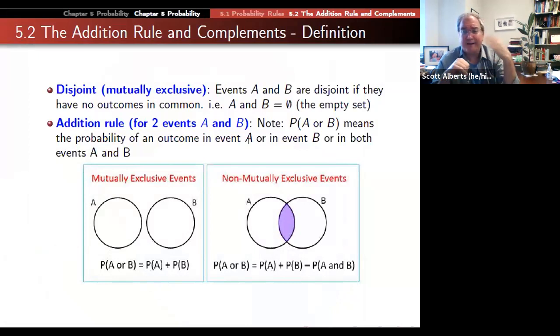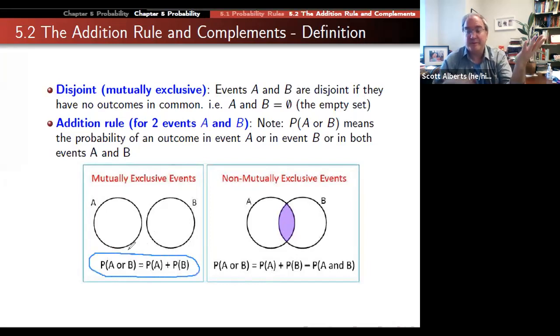So if I say what's the probability a roll of one and what's the probability a roll of three? Well on one roll of the die I can't get a one and a three. I only get one outcome. So those two events are disjoint. What that means from a probability perspective is that we can just do simple addition. If the probability of rolling a one is one-sixth and the probability of rolling a three is one-sixth, one-sixth plus one-sixth is two-sixths, thus one-third.